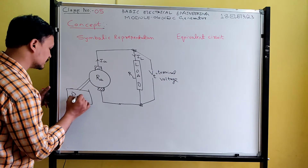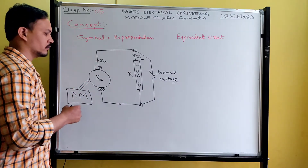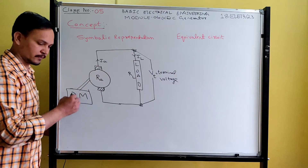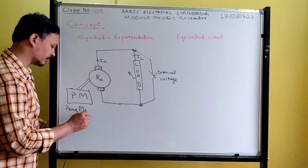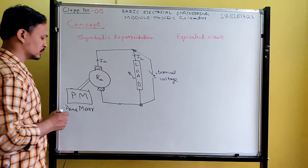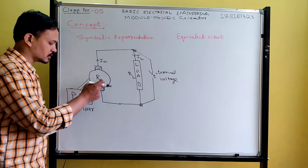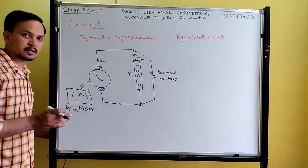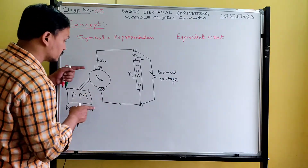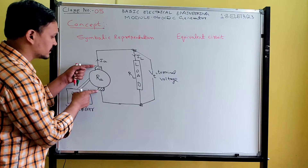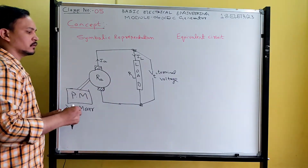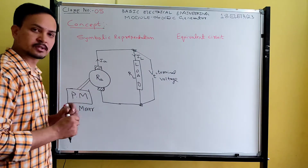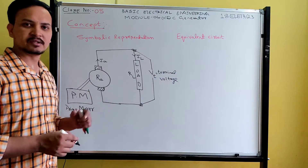The input required for a generator is from a prime mover — some mechanical input. Generator means mechanical to electrical conversion. The prime mover, PM, may be in the form of a turbine. Generally, water falls on the turbine, the turbine rotates, and the armature shaft is coupled to the turbine shaft, so the armature also rotates. The applications of a generator include lighting purposes and battery charging using DC generators.